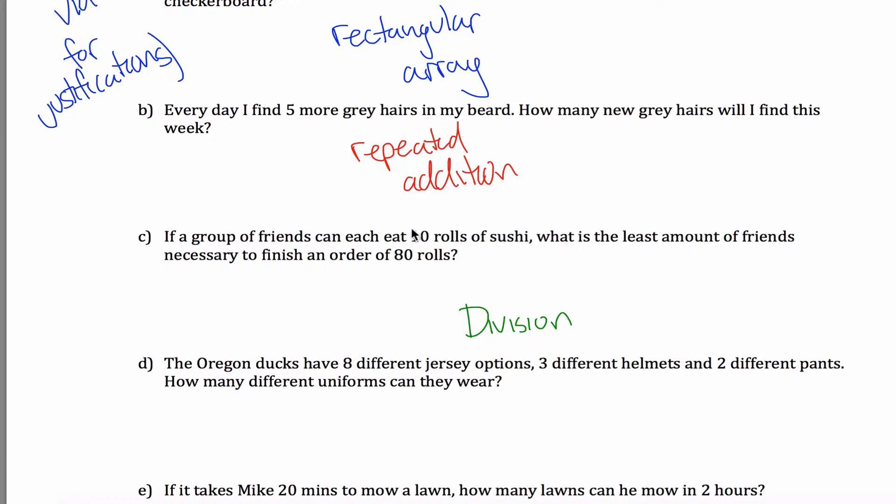If a group of friends can each eat 10 rolls each, this is the size. Think about it as you're going to take 80 rolls, and you're going to put them into, you got the people, maybe I'll write this, people are your groups. So you're going to take these 80 rolls, and you're going to allocate them 10 each to the people. So this would be measurement. You'll measure out groups of size 10.